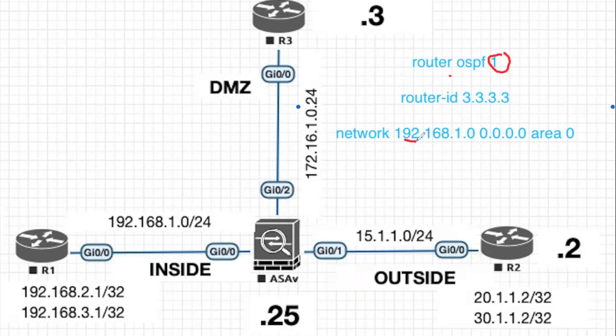In this command, the IP address is followed by the wildcard mask — this is not a subnet mask. This is the wildcard mask bit, which is directly opposite to the subnet mask. Then area and area number.